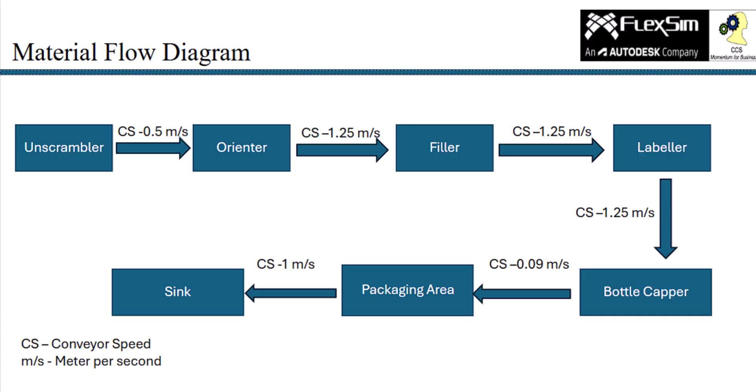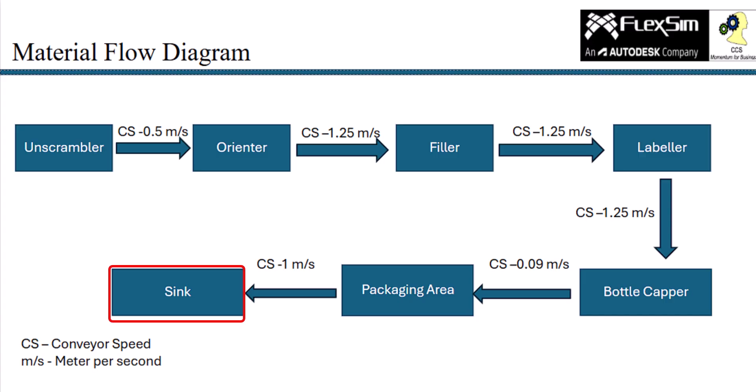Then, the bottles move to the packaging area with a slower conveyor speed of 0.09 meters per second. Here, the bottles are packed and moved on to the next part of the workflow with a conveyor speed of 1 meter per second. Now we will replicate the flow with the simulation model.